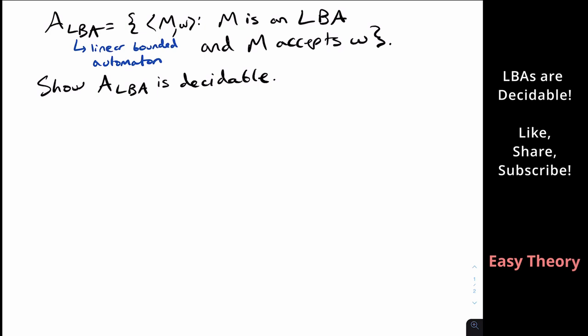So this language is A_LBA, where LBA stands for linear bounded automaton. So it's like a Turing machine, but it has one additional functionality in that if we have some input w1, w2, w3 up to wn, then we can't actually go past right after the end of the input.